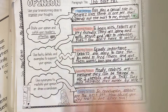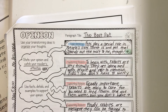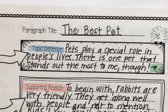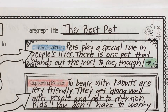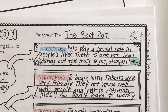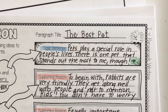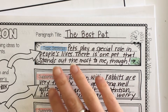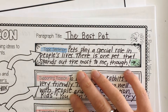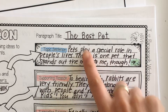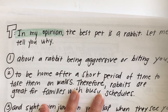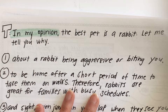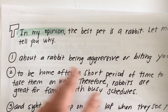For my topic sentence — I'll zoom in on that — remember your topic sentence is blue and your opinion is green. The boxes are a little small so I wrote on the back, like we do in class. For my topic sentence I wrote: 'Pets play a special role in people's lives. There's one pet that stands out the most to me though.' That's catching my reader's attention. Then I state my opinion in green: 'In my opinion, the best pet is a rabbit — let me tell you why.' That's kind of a transition sentence.